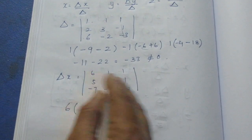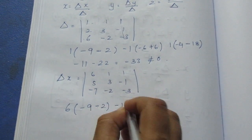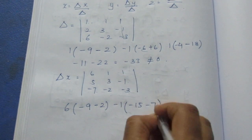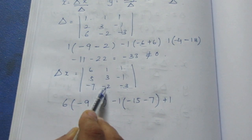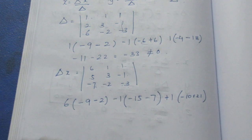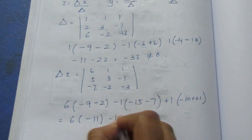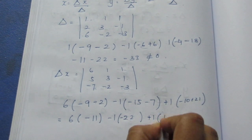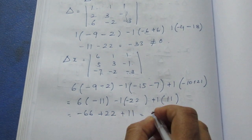For delta x, the first row expansion: we cross-multiply row and column. We get minus 9 minus 2 (plus item), plus into minus (minus item). Then minus 15, and the next minor: minus 10 plus sign, plus 21. Continuing: 6 minus 11, then minus 22, then 11. Totalling: minus 66 plus 22 plus 11 gives 33 minus 66, so delta x equals minus 33.